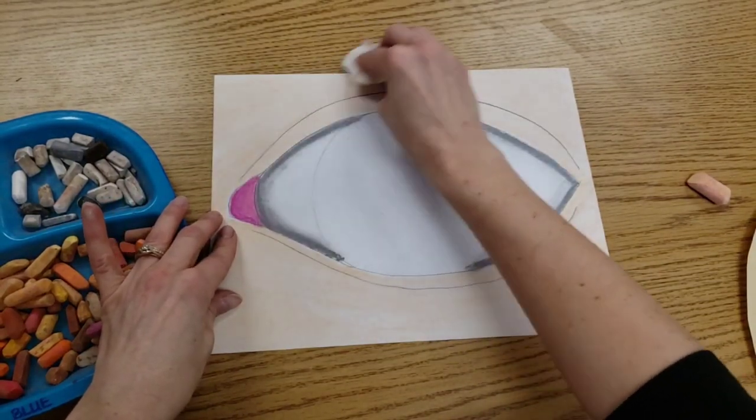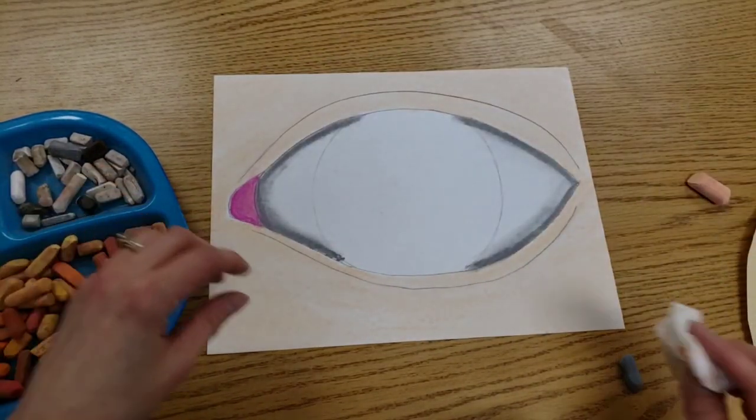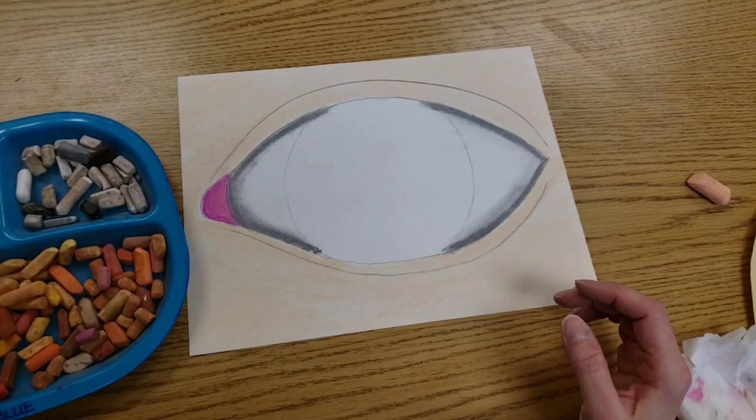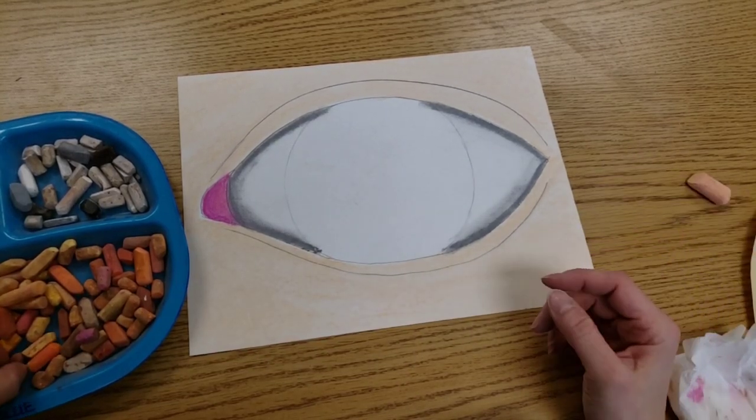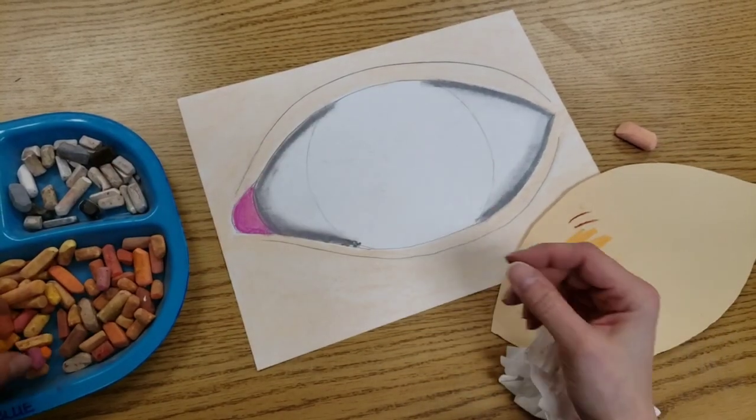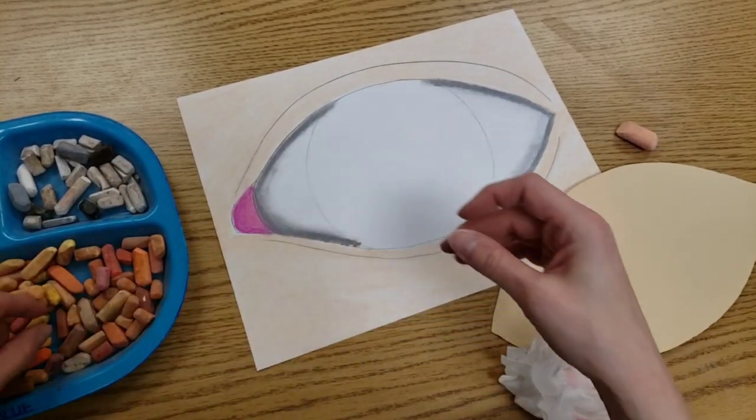If you accidentally get somewhere you don't want it, guess what? The tissue is great for wiping some of that away very carefully. Okay. Now, the eyelid needs some shadow too. Testing for a color that's darker than what I used, but not too dark.